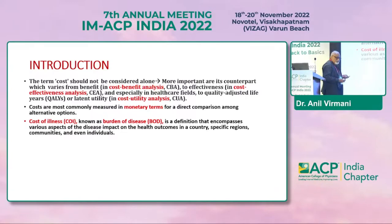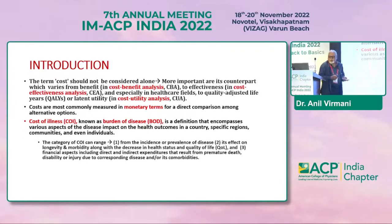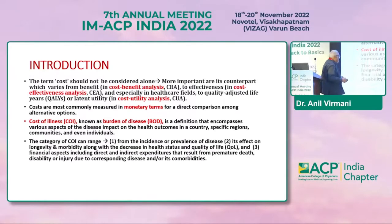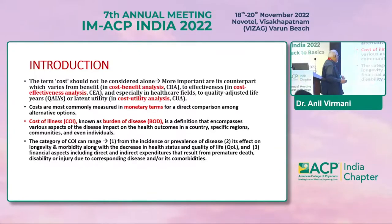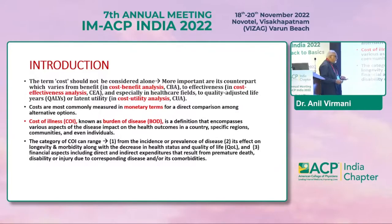Cost of illness and burden of disease is another aspect, and it encompasses various aspects of the disease on health outcomes in a country, specific regions, communities, and even individuals. The category can range from the incidence or prevalence of disease, its effect on longevity and morbidity, decrease in health status and quality of life, and financial aspects including indirect expenditures from premature death, disability, or injury due to the disease or its comorbidities.